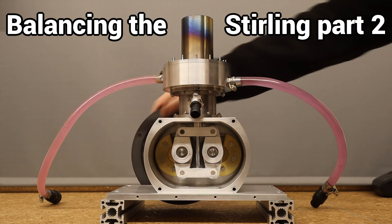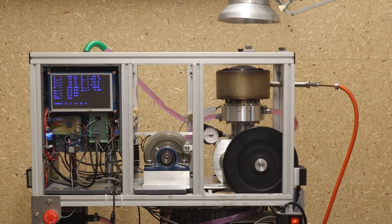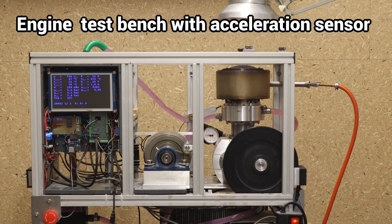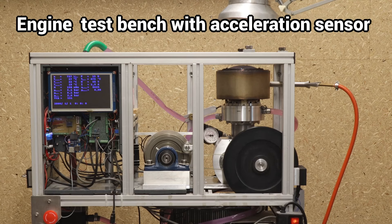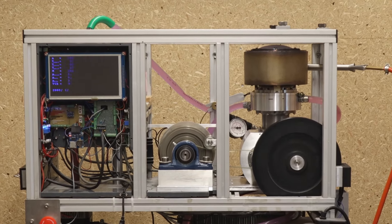After preparing the final balancing of the rhombic sterling engine in the last videos, it is now time to dynamically measure the unbalance in the engine test bench with a built-in acceleration sensor. The measured values can then hopefully be used to balance the sterling engine very well.